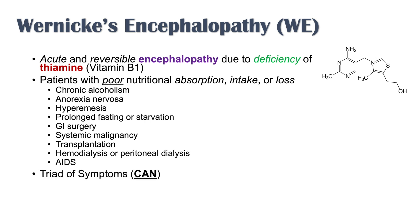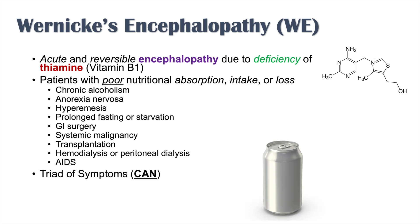There is a triad of symptoms for Wernicke's encephalopathy, remembered by the mnemonic CAN — you can think of a can of beer. C is for confusion, A is for ataxia, and N is for nystagmus.